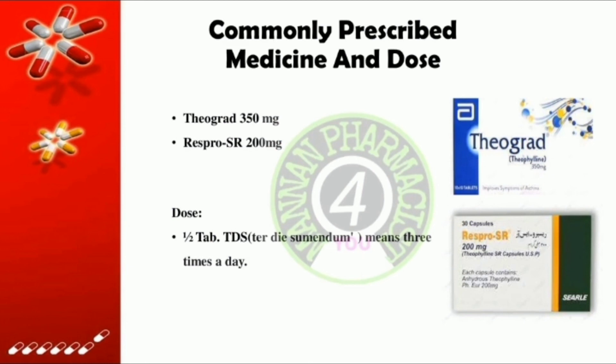Commonly prescribed brands include Pheograd 350 mg and Respro SR 200 mg. The dose is half a tablet TDS — meaning three times a day.